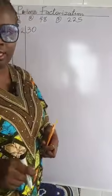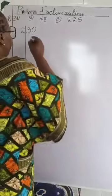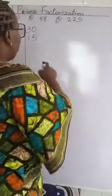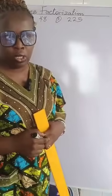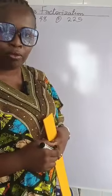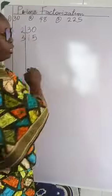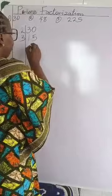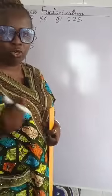2 divides 30 — that's 2 times what number will give me 30? We'll have 15. Now we have 5 ending it. Are we still going to use 2 as the smallest prime? No. We are still going to use the smallest prime number to divide, and we need to use 3.